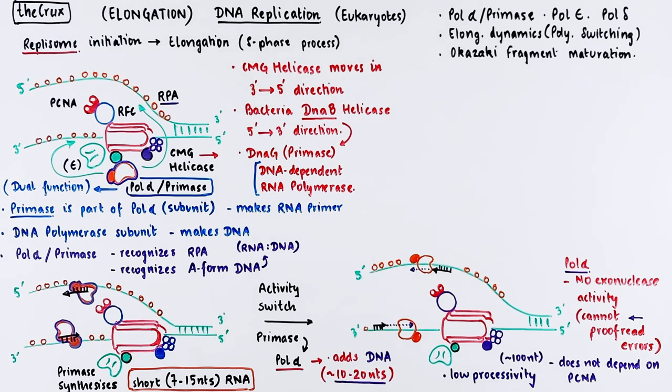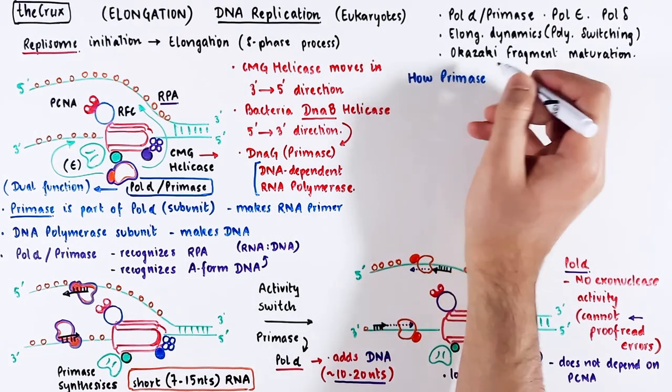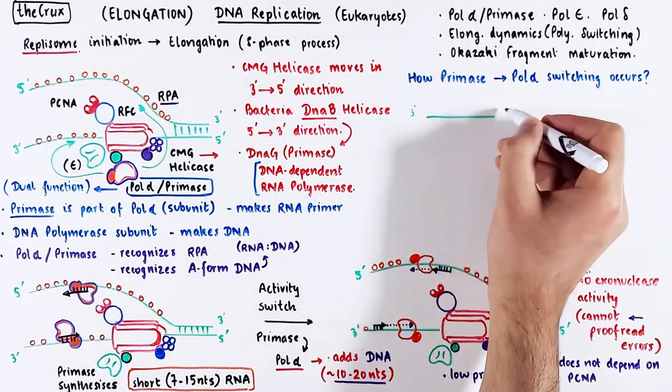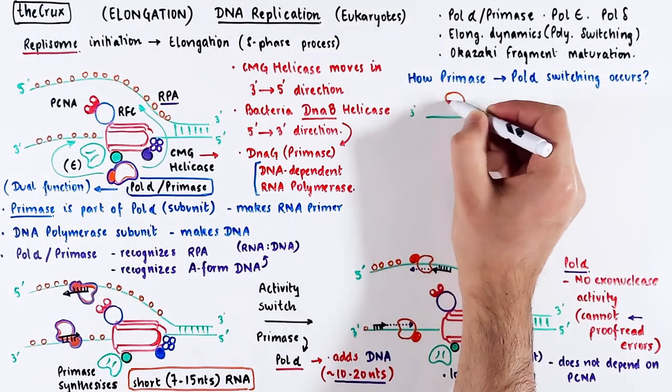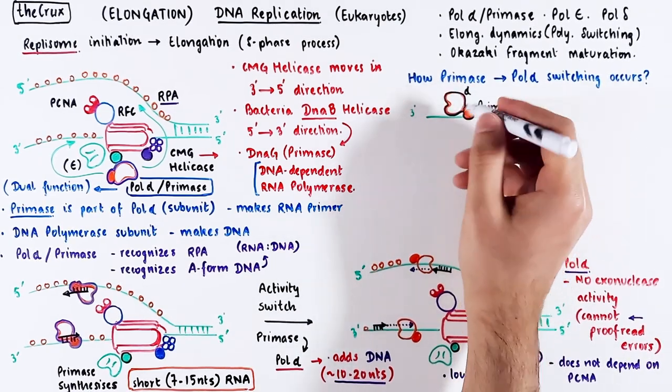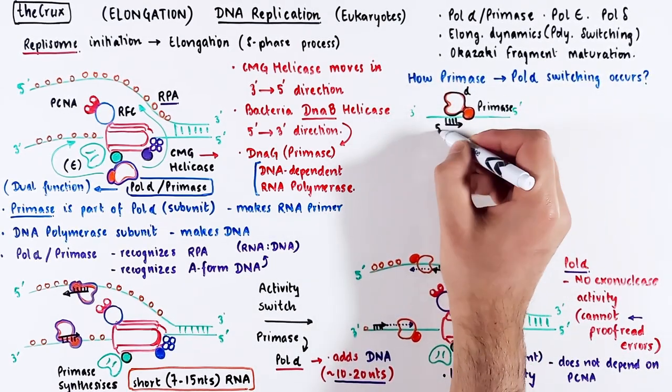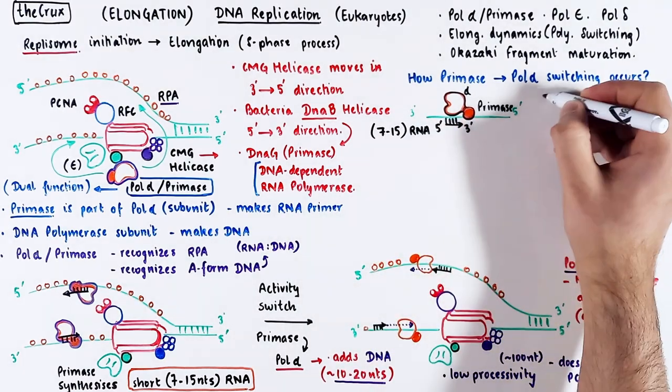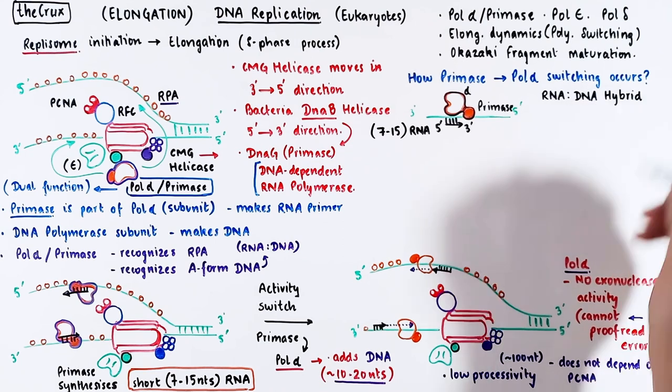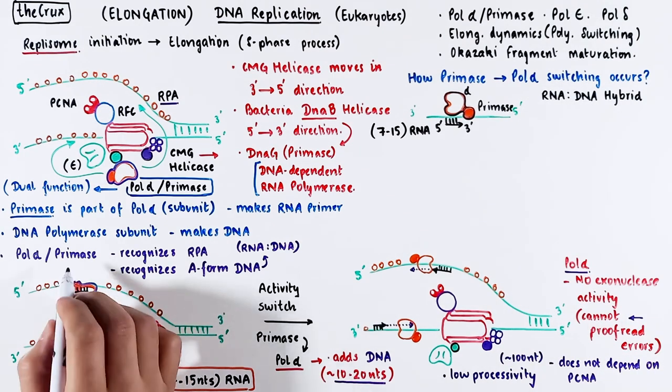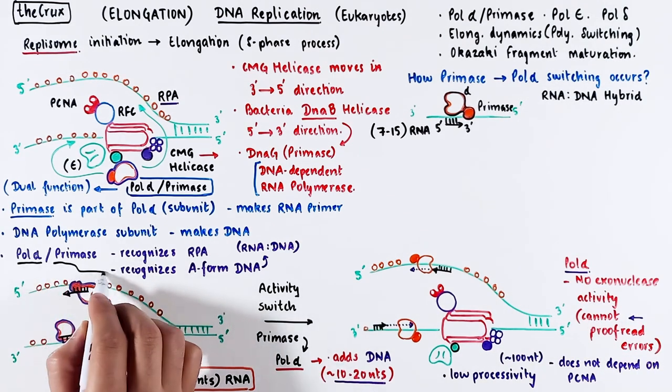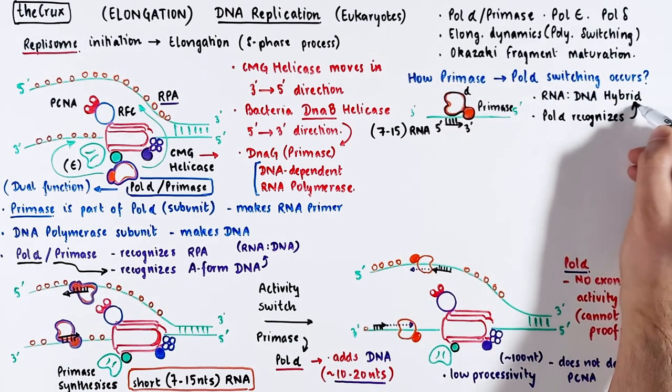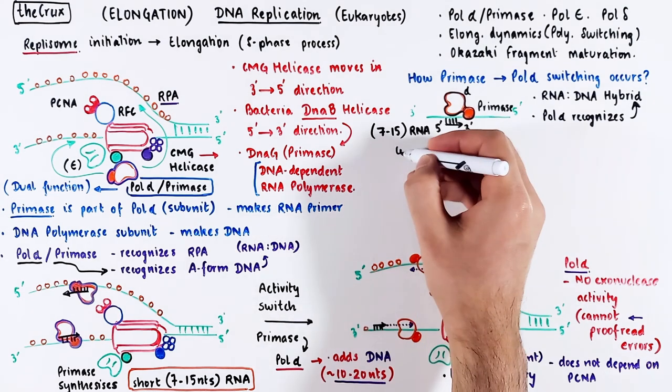Here comes our first type of switching event. How is it that primase activity can be switched into a DNA polymerase activity? Let's take a closer look. The primase is the first one to make contact and copy the DNA into an RNA, and this is about 7-15 nucleotides in length. This process gives you the RNA-DNA hybrid. And as we said before, the polymerase alpha likes these kind of duplexes because they look like the A form of DNA. This now sets up a competition between the primase and the polymerase alpha subunits.